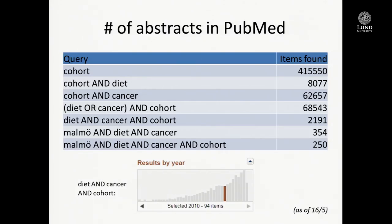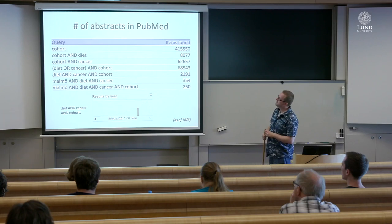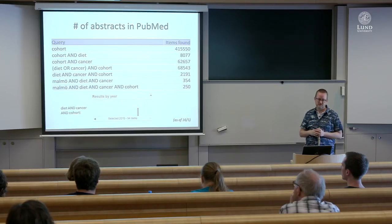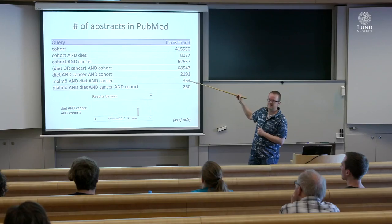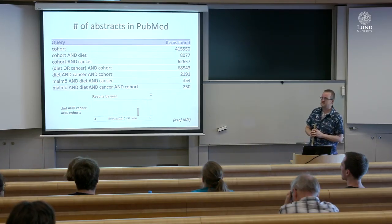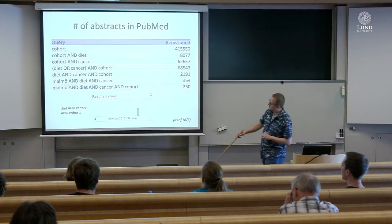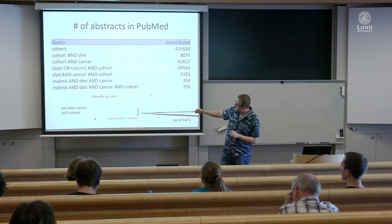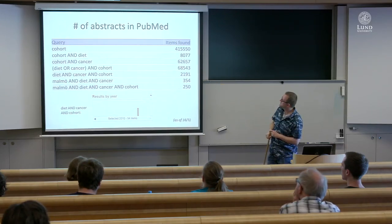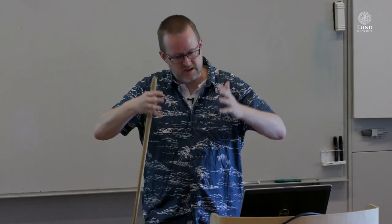We look in the PubMed database: if we just search for the word 'cohort,' we find 400,000 papers. If we combine cohort and diet, 8,000; cohort and cancer, 60,000; diet or cancer and cohort, 68,000. What we actually used is the smallest one — we searched for 'Malmö diet and cancer' to find papers that use this specific cohort. You can see it grows over time: in 2010 there were 94 items, and now there are around 2,000 papers. So we limited ourselves to the Malmö Diet and Cancer cohort just to make some kind of sense of it.